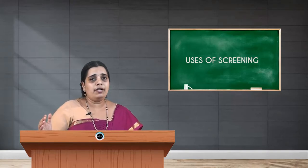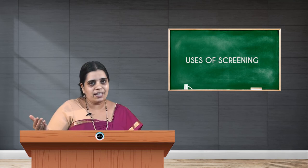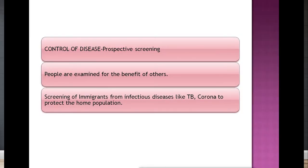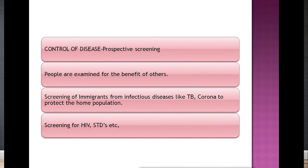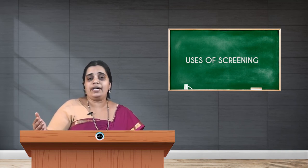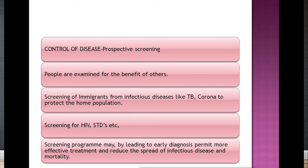During the COVID pandemic, a patient with coronavirus would be asked about all their contacts. Those contacts are then traced and screened to find out whether they have also contracted the disease. Similarly, for HIV, you counsel the patient, do contact tracing, and check contacts for HIV, syphilis, gonorrhea, or other sexually transmitted infections. This is prospective screening — screening to control disease spread.